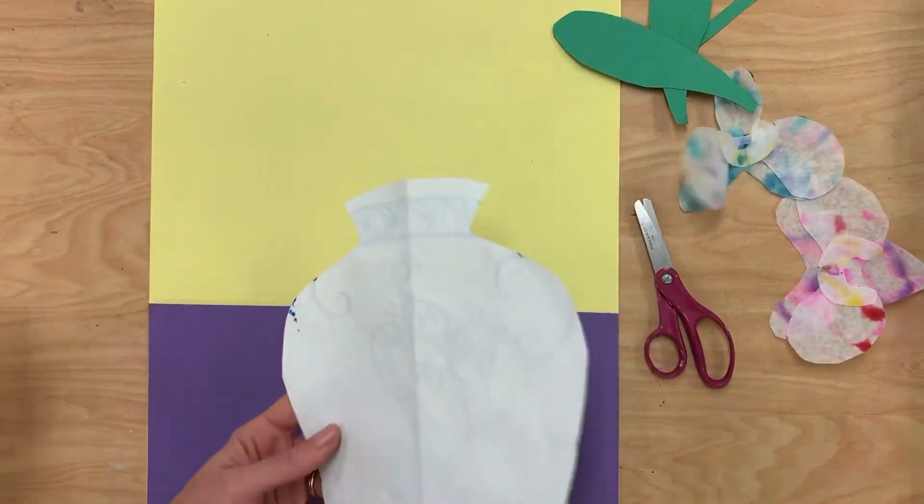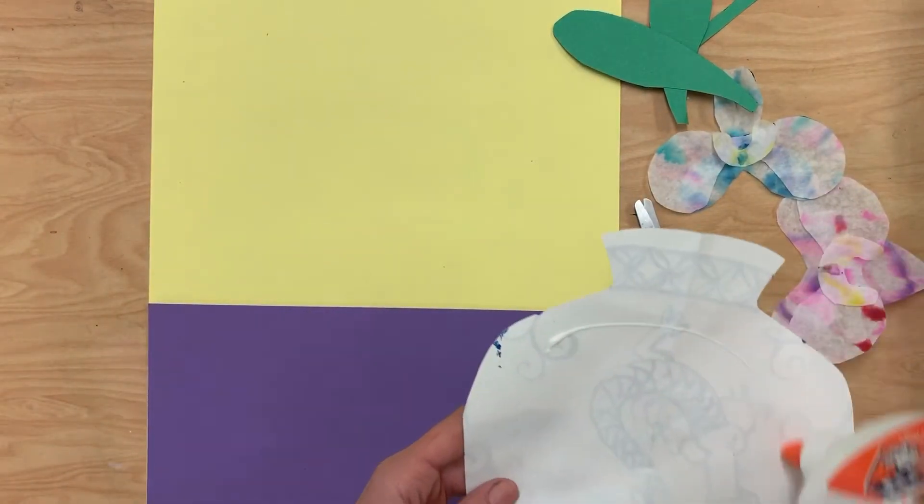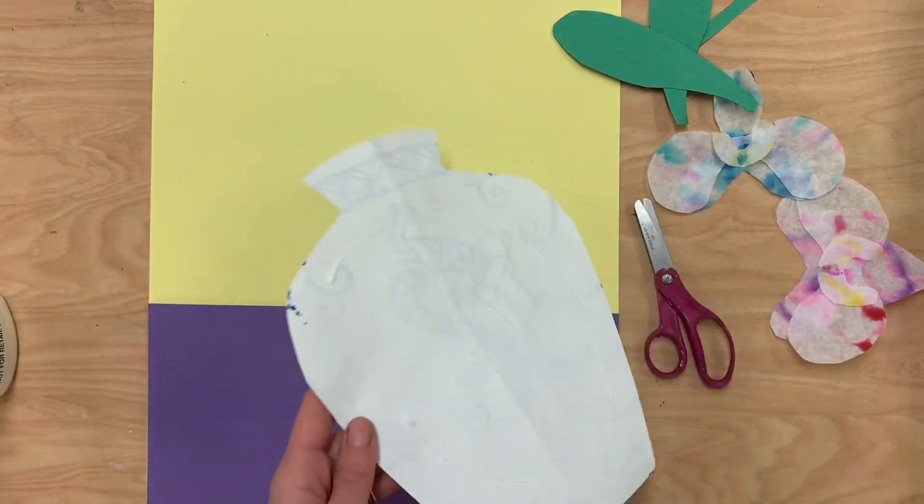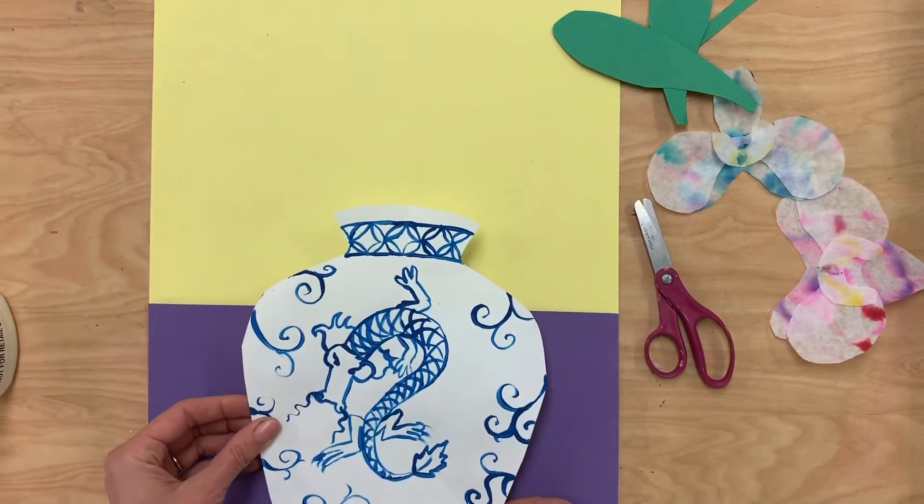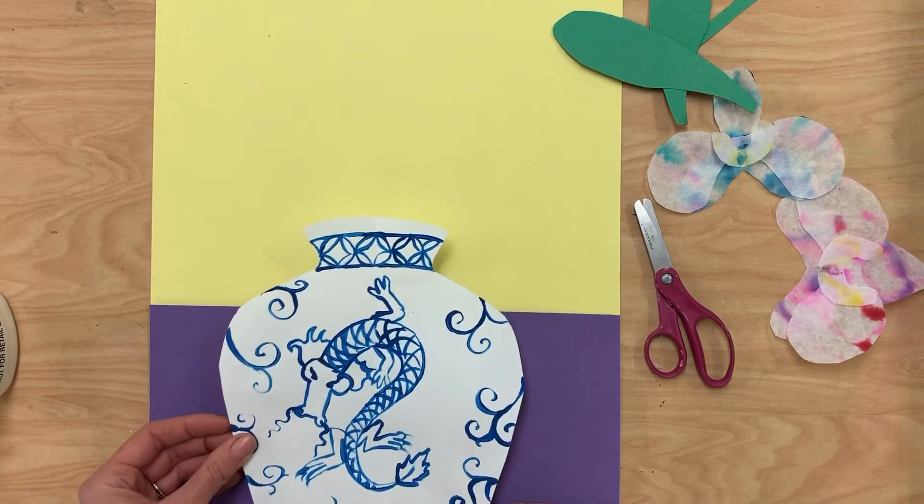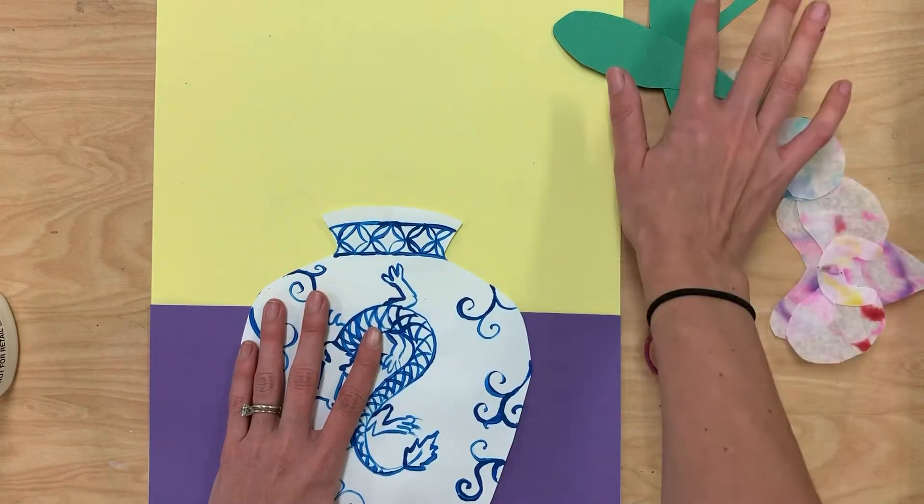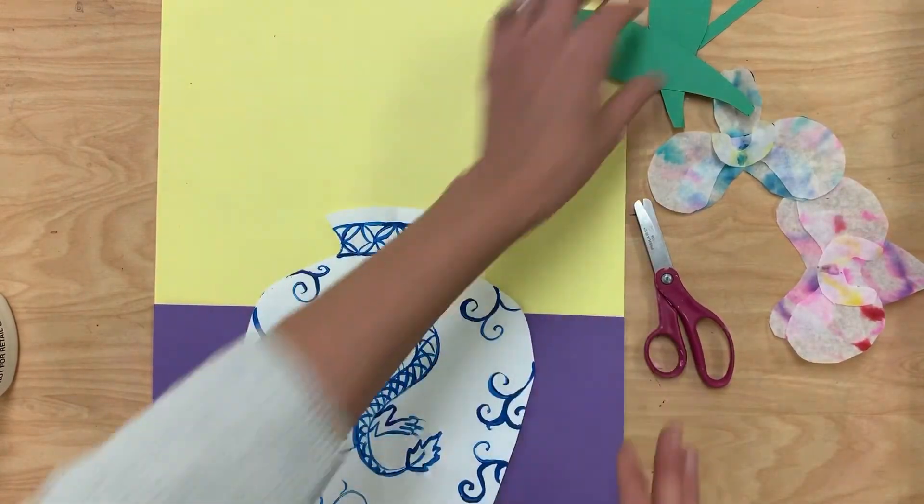Then I'm going to glue my vase down. I'm actually going to be a little bit careful here. Make sure that I don't glue the top yet because I have to stick my stems inside there. And I don't want to move it up too high because I need space for my orchids and my stems. Once I have this on,